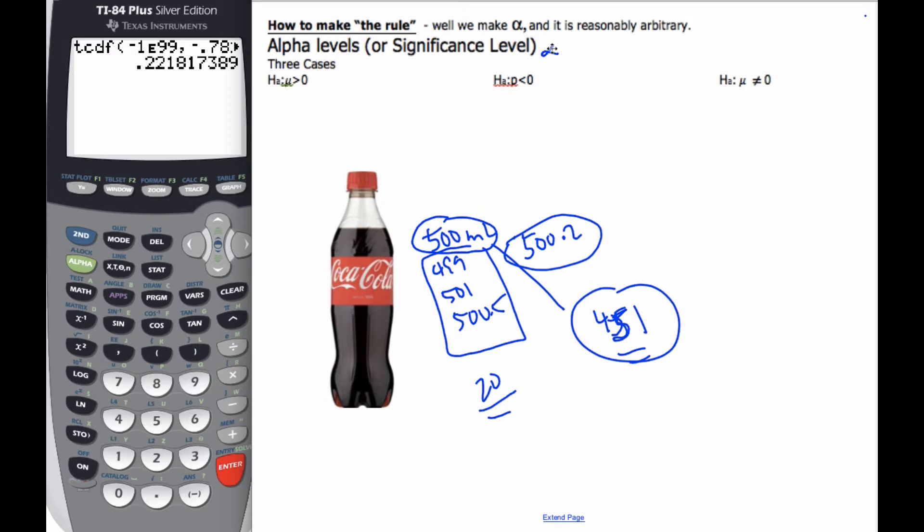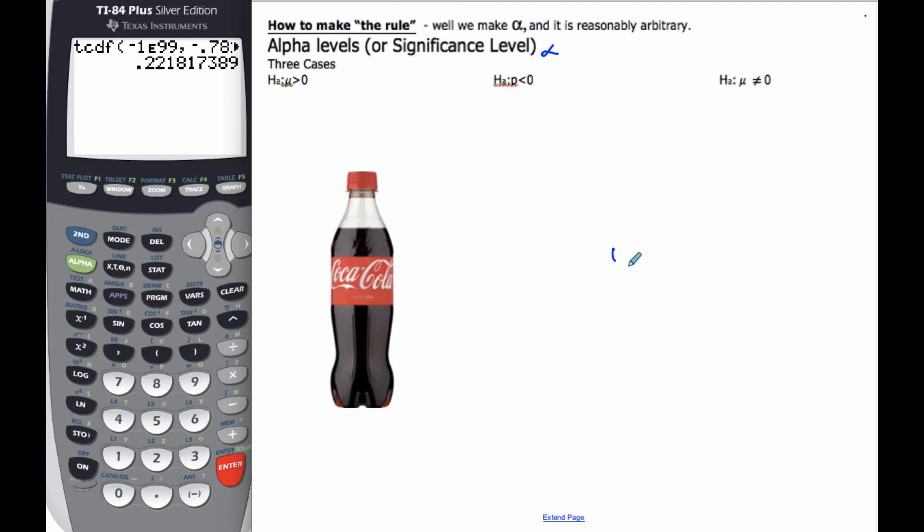And so the alpha level is basically your rule of thumb of when does it go from I expect this to I do not expect this. If I'm supposed to have 500 milliliters, if the mean was 499 of my sample, I don't think that would surprise anyone. If the mean was 400 milliliters, I think that would surprise people. So somewhere between these two numbers, we made a decision to say now it's unexpected.